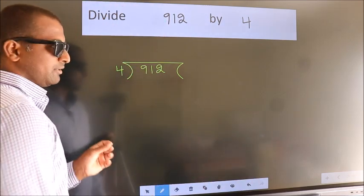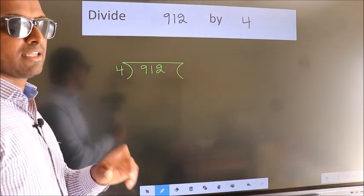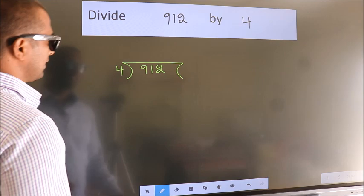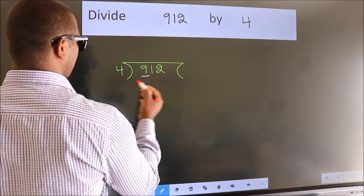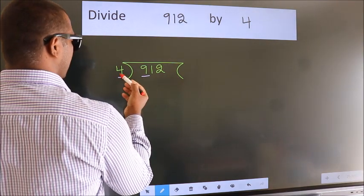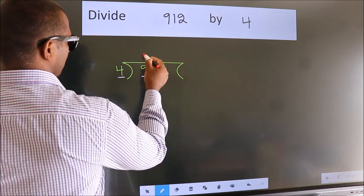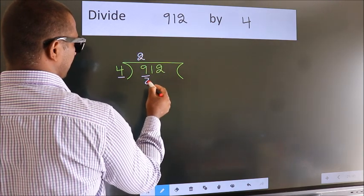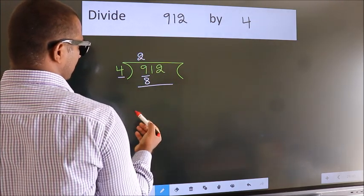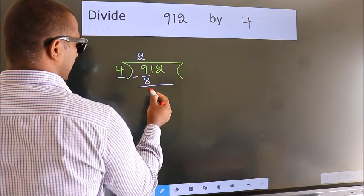This is your step 1. Next, here we have 9, here 4. A number close to 9 in the 4 table is 4 twos, 8. Now, we should subtract. We get 1.